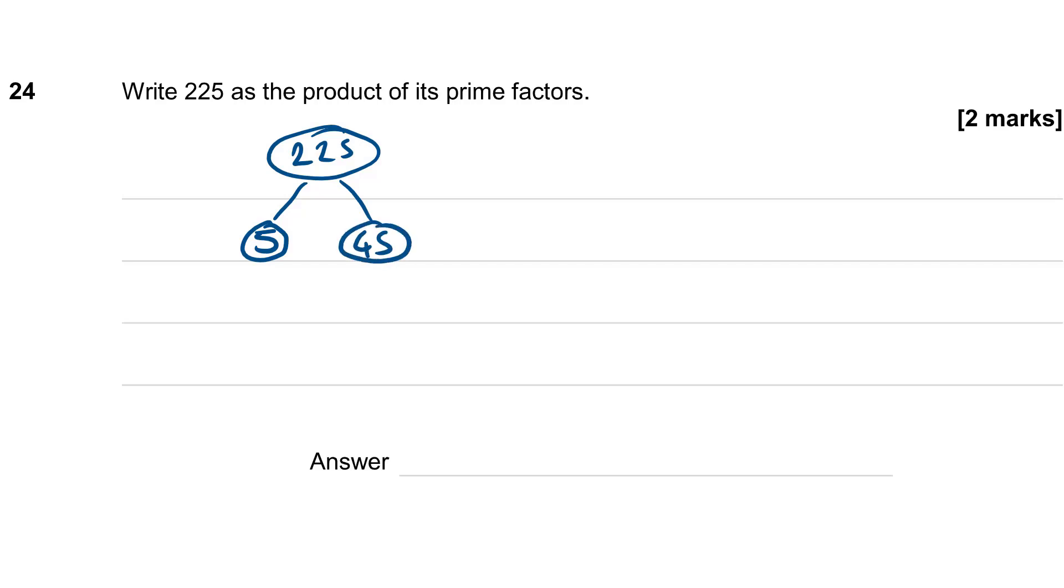Now are either of those two numbers prime? 5 is prime, so that's a stopping point, but 45 is not. I can break 45 down into 9 times 5, and again, 5 is prime, so that one is a stopping point, but 9 isn't. I can break 9 down even further into 3 times 3. Now those two are prime numbers, so all my branches are now terminating at a prime. So that means my number 225 is going to be all those terminating branches multiplied together, so 3 times 3 times 5 times 5.